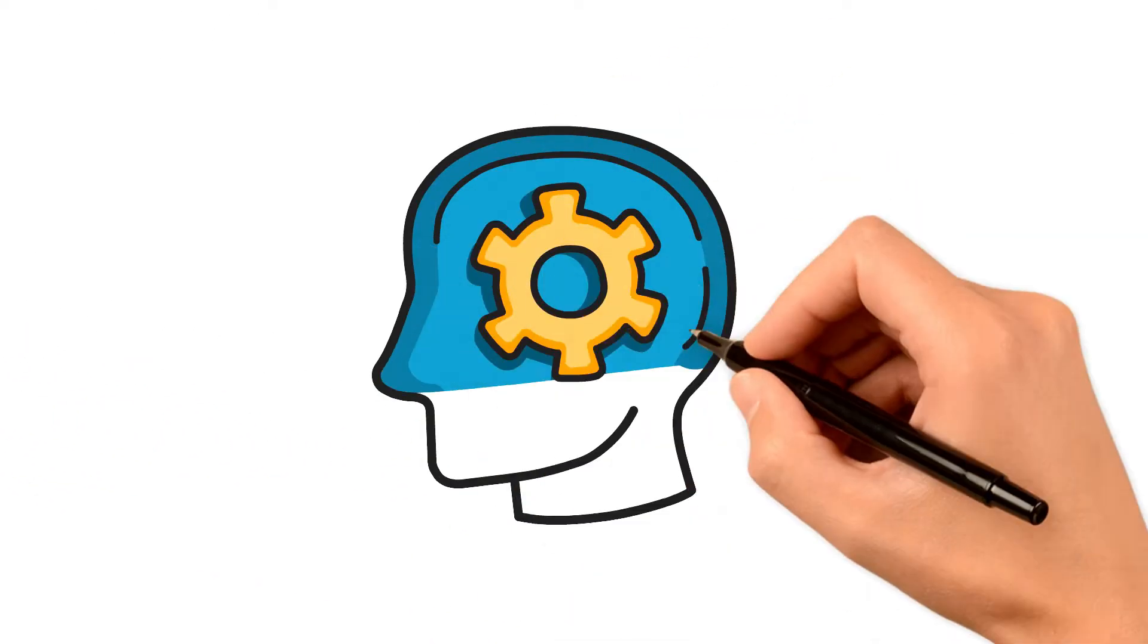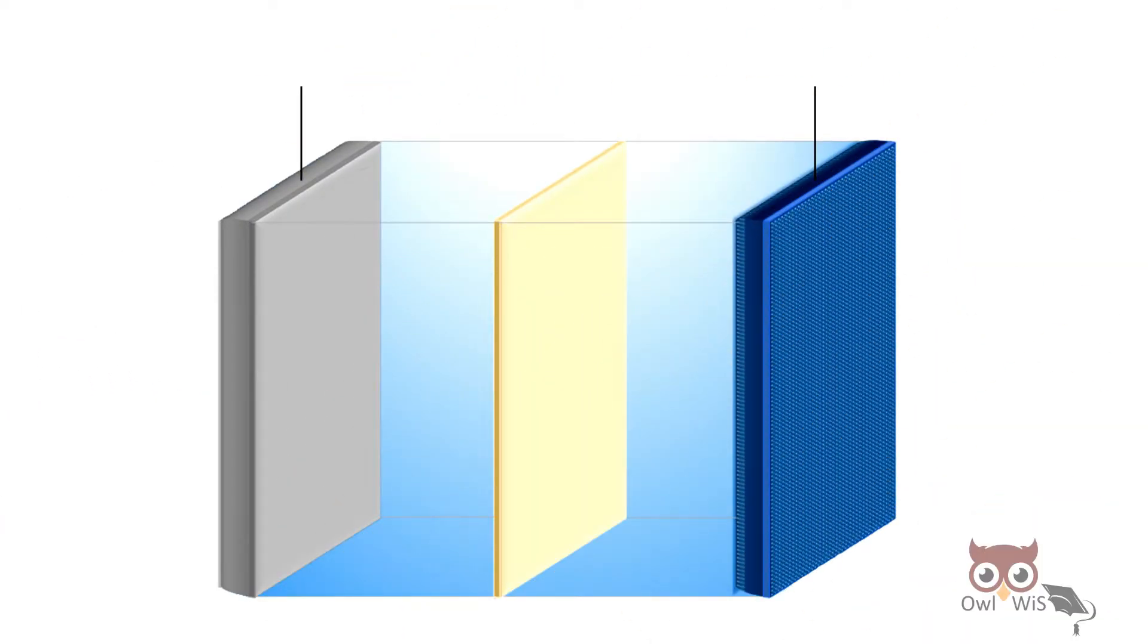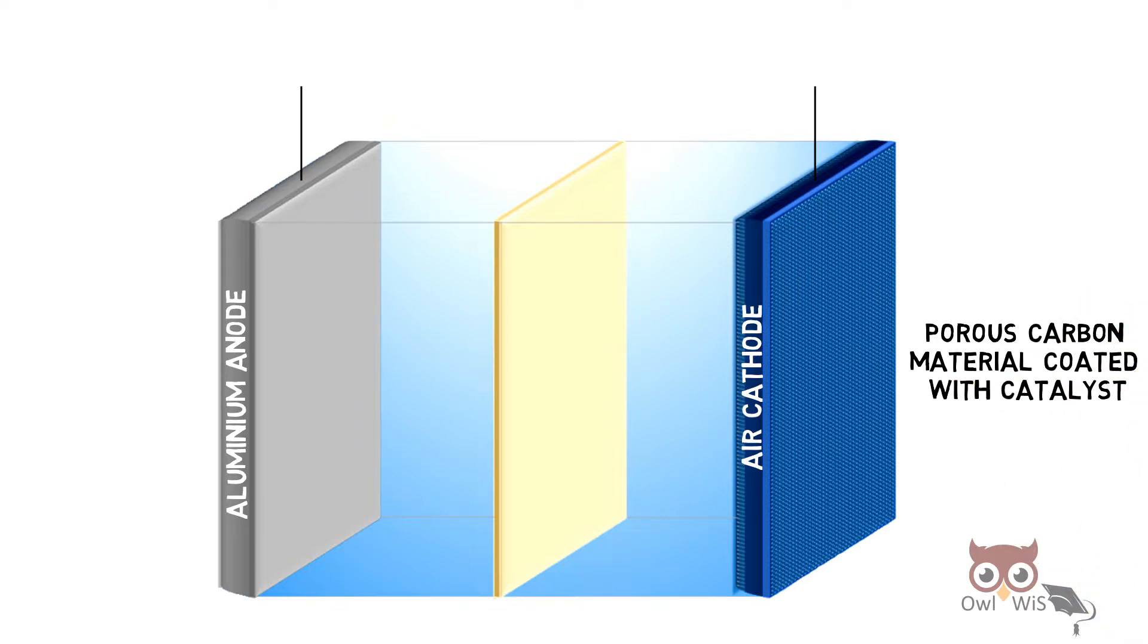Let us understand the working. Consider a battery cell with Aluminium anode, air cathode which is porous carbon material coated with catalyst, and aqueous electrolyte.